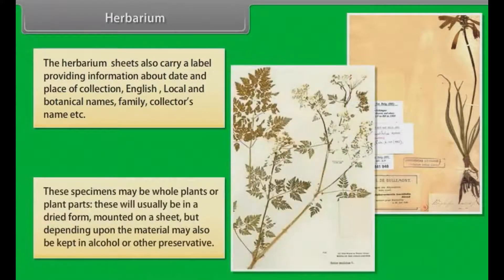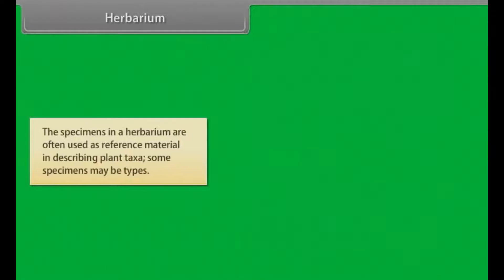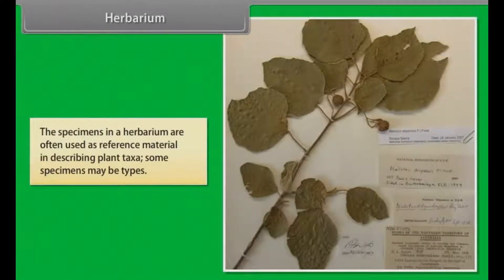These specimens may be whole plants or plant parts, usually in dried form mounted on a sheet, but depending upon the material may also be kept in alcohol or other preservatives. The specimens in a herbarium are often used as reference material in describing plant taxa, and some specimens may be types.